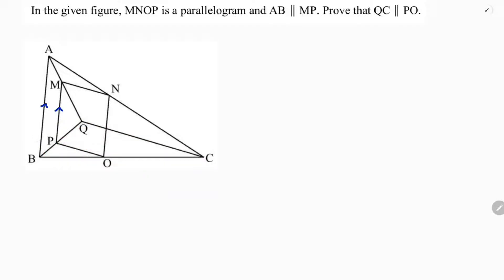First, I'll prove triangle QMP and triangle QAB similar — the small triangle and the big triangle. Since it is a parallelogram, MP is parallel to NO. MP is parallel to AB is given, so then NO is parallel to AB. Then I'll take the big triangles CAB and CNO.